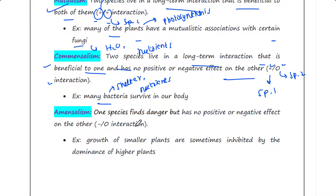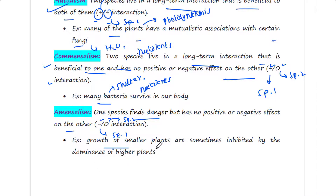The next type of interaction is amensalism. In amensalism, one species is harmed but the other has no positive or negative effect. This is denoted as a minus-zero interaction: species one gets a negative effect and species two is unaffected. For example, the growth of smaller plants is sometimes inhibited by the dominance of taller plants, but this does not show any helpful or harmful effect on the taller plants.